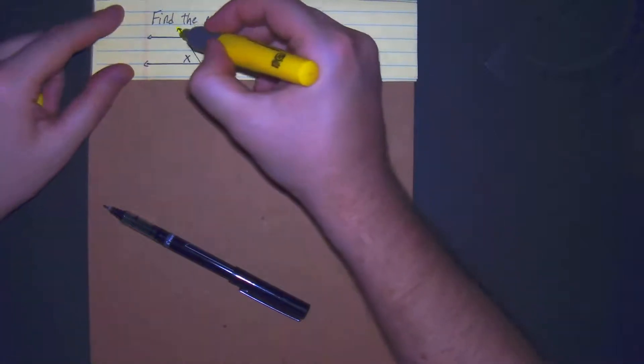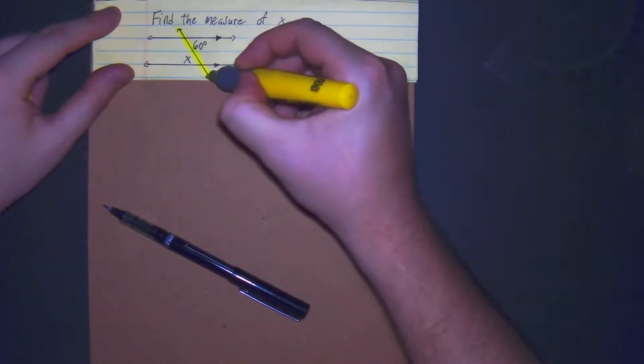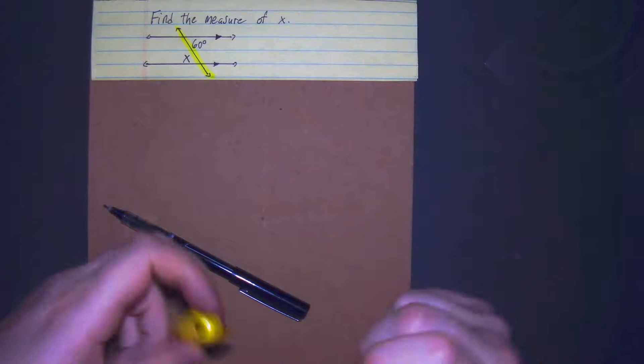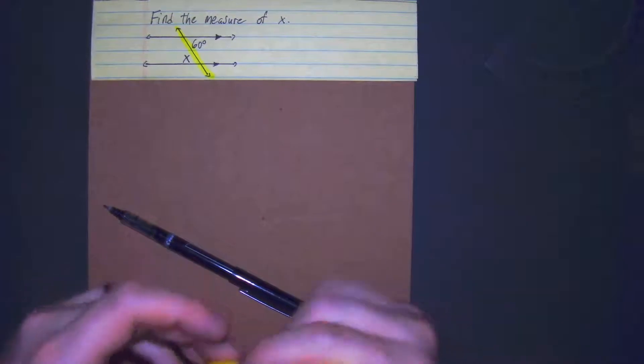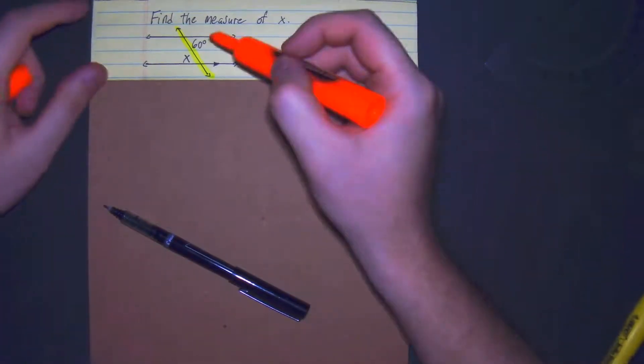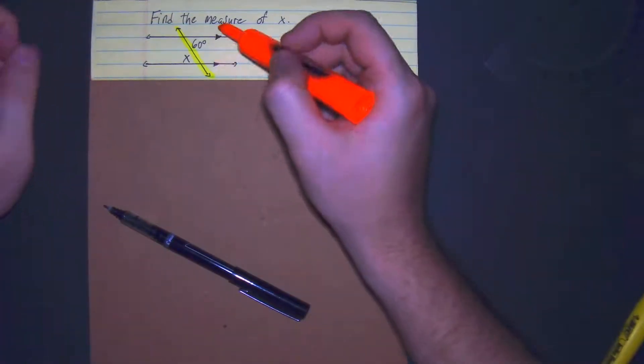First, I notice that we have a transversal, because it's intersecting two or more lines — two lines in this situation. And we have our two parallel lines.